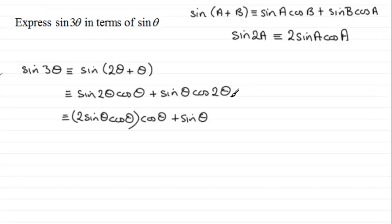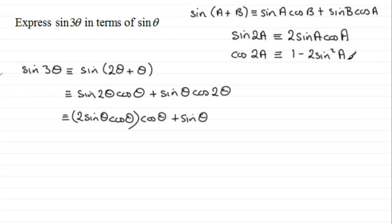We need to change this cos(2θ) — it's a double angle. There are three versions for cos(2A), but the one we're interested in is the one containing only sin(A), which is 1 - 2sin²(A). So cos(2θ) = 1 - 2sin²(θ), and we have sin(θ) multiplied by (1 - 2sin²(θ)).